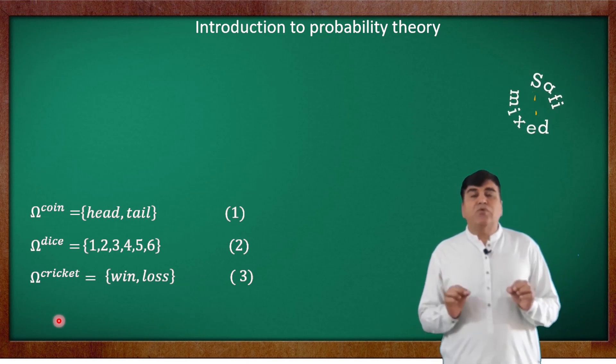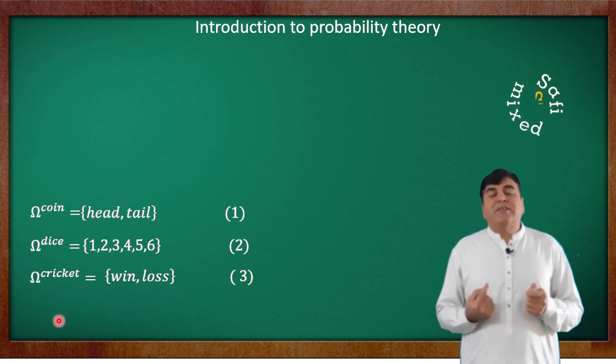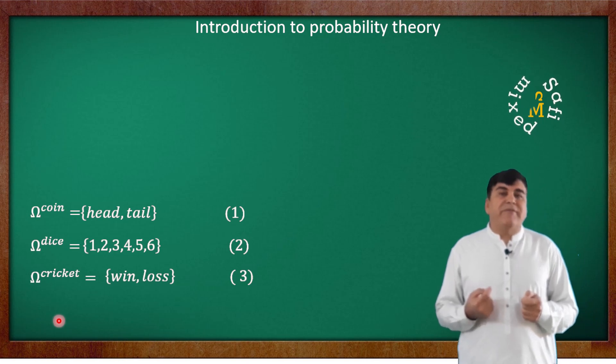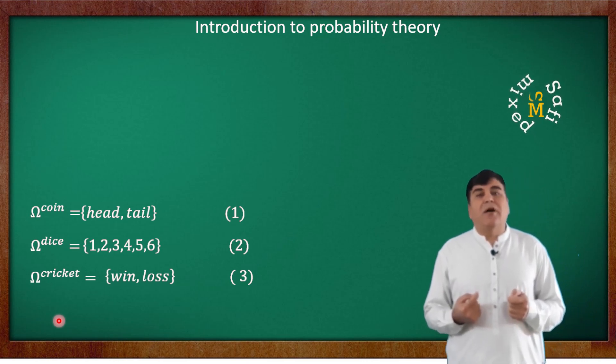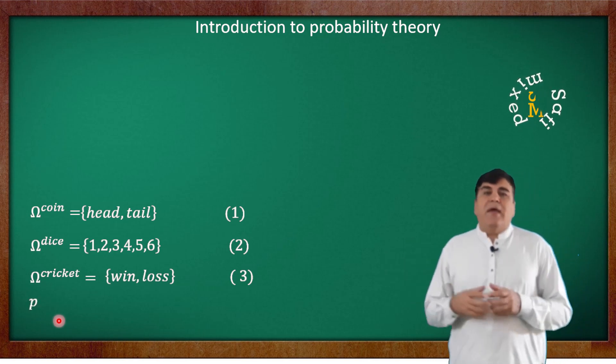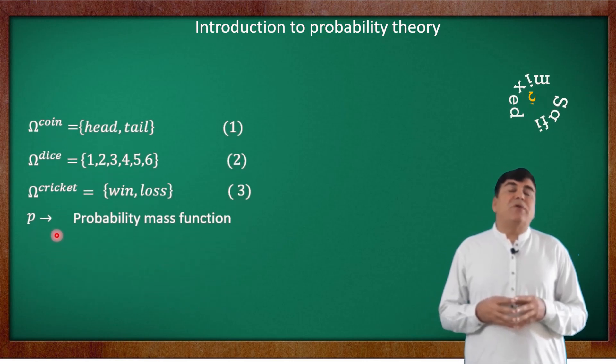The fourth thing we need to know is the probability function. The probability mass function is a quantization in the form of a number of each expected outcome of an event. This is usually denoted by the letter P and can have any value bounded between 0 and 1.